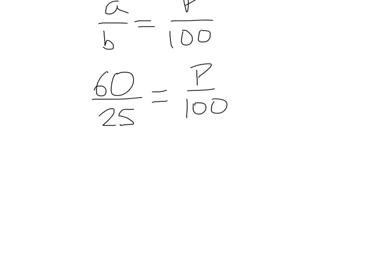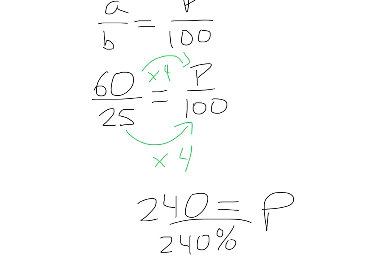So, how do I solve this? Well, I can actually use a little mental math, because I know to get from 25 to 100, multiply by 4. So what is 60 times 4? Well, that's 240, and that equals P. But what is P? P is a percent. So my final answer is actually 240 percent.